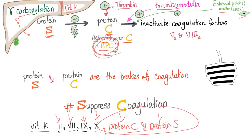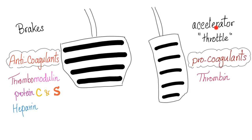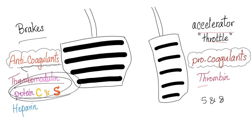So if factors 5 and 8 are accelerators of coagulation, protein C is a brake on coagulation. The mnemonic is: protein S and protein C suppress coagulation. Accelerators of coagulation include thrombin and all coagulation factors, including 5 and 8. The brakes include anticoagulants such as thrombomodulin, protein C, and protein S.